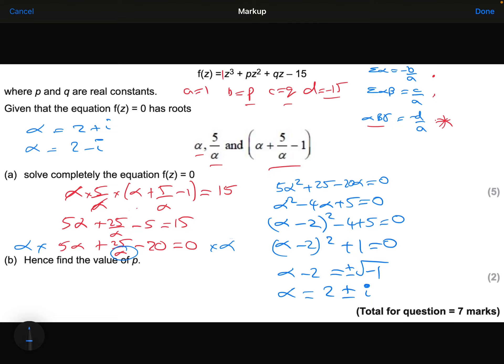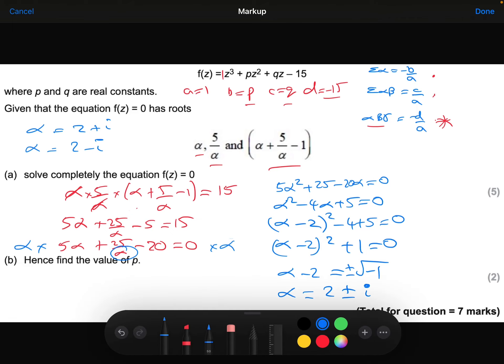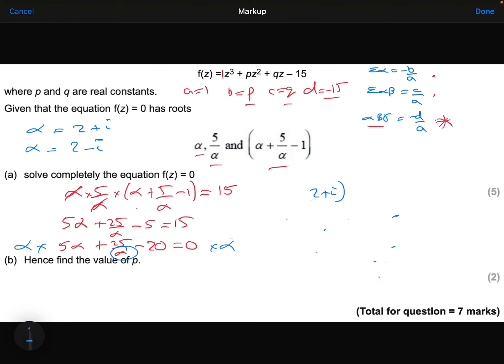The easiest way for me to get that third root, I think, is remember how they should multiply together. When I times my three roots together, I should get minus d over a. So let's use that fact to help me here. 2 plus i times 2 minus i, multiplied by my third root, and I'll just call it gamma for now, should equal minus d over a, which is minus 15.